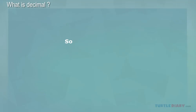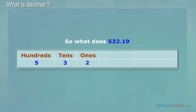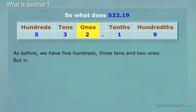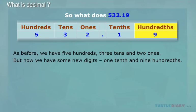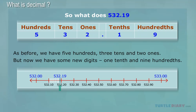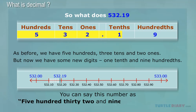So, what does 532.19 mean? As before, we have five hundreds, three tens, and two ones. But now we have some new digits: one tenth and nine hundredths. So we have a number that is bigger than 532, but smaller than 533.